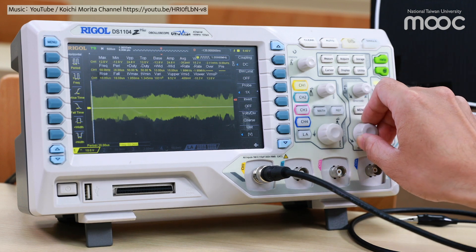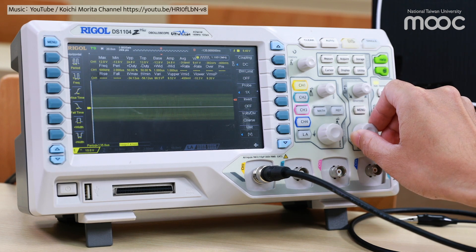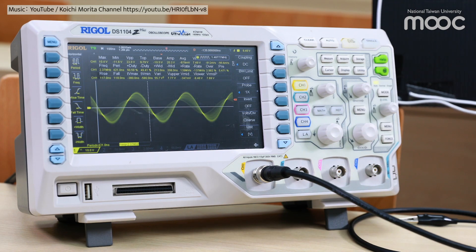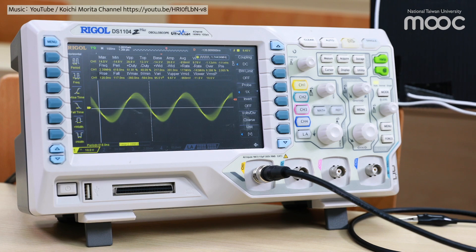Meanwhile, the amplitude-modulated radio waves can be observed on the oscilloscope. The envelope of this detected waveform is the audio signal.